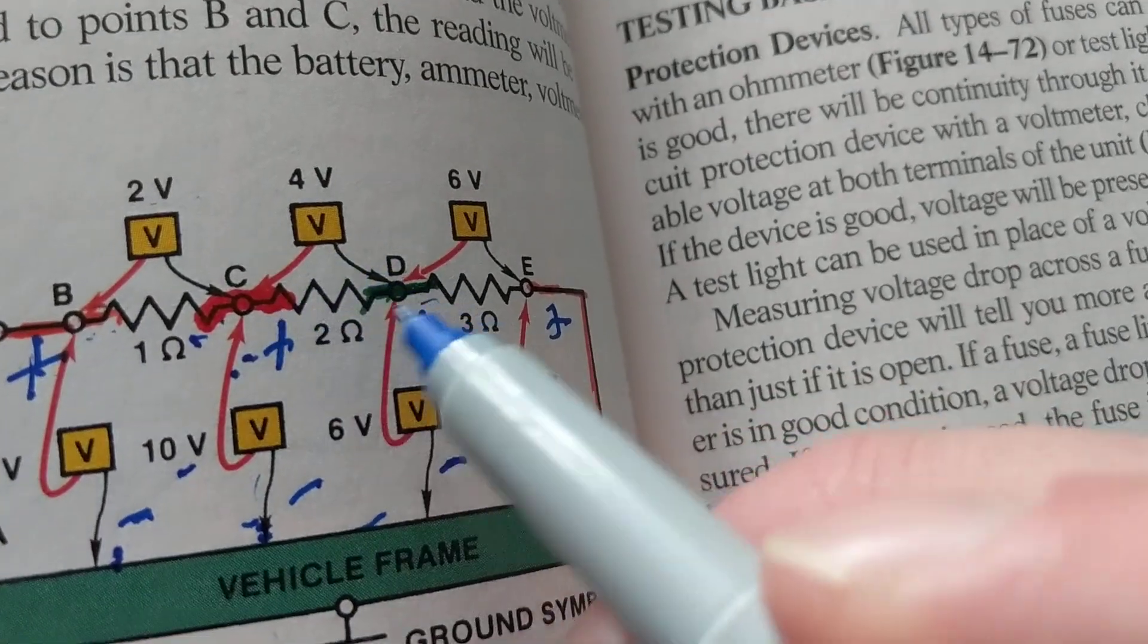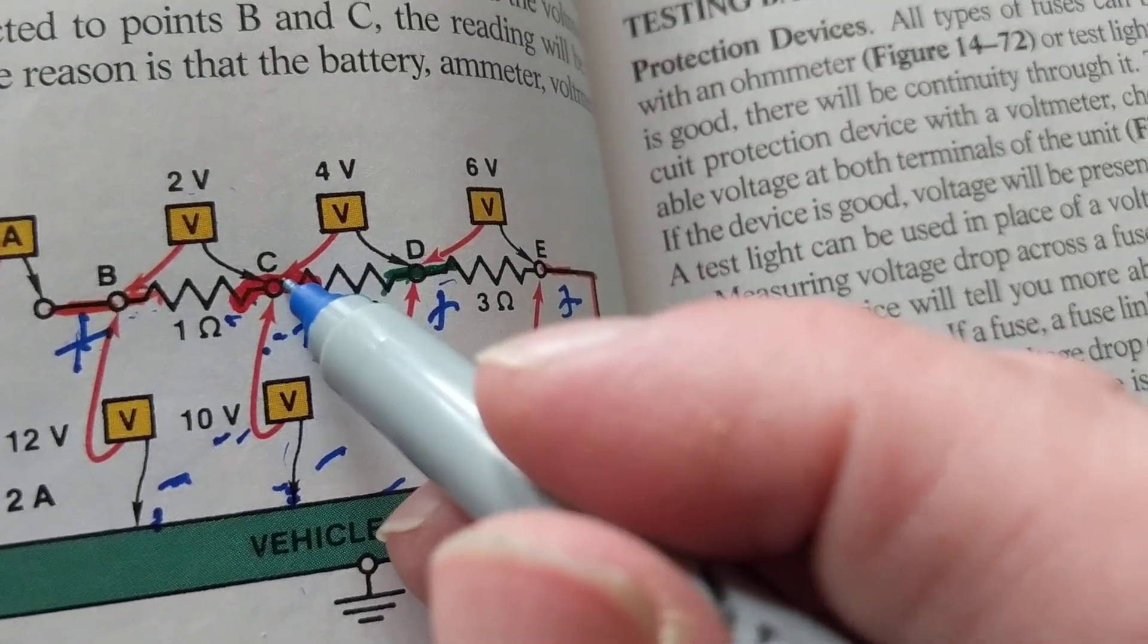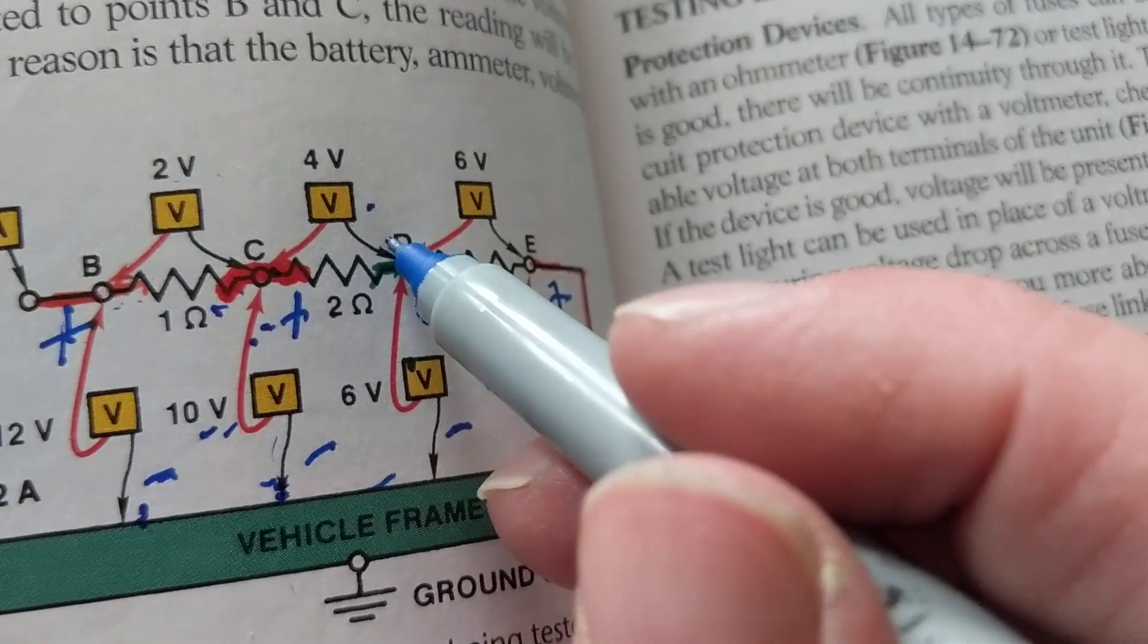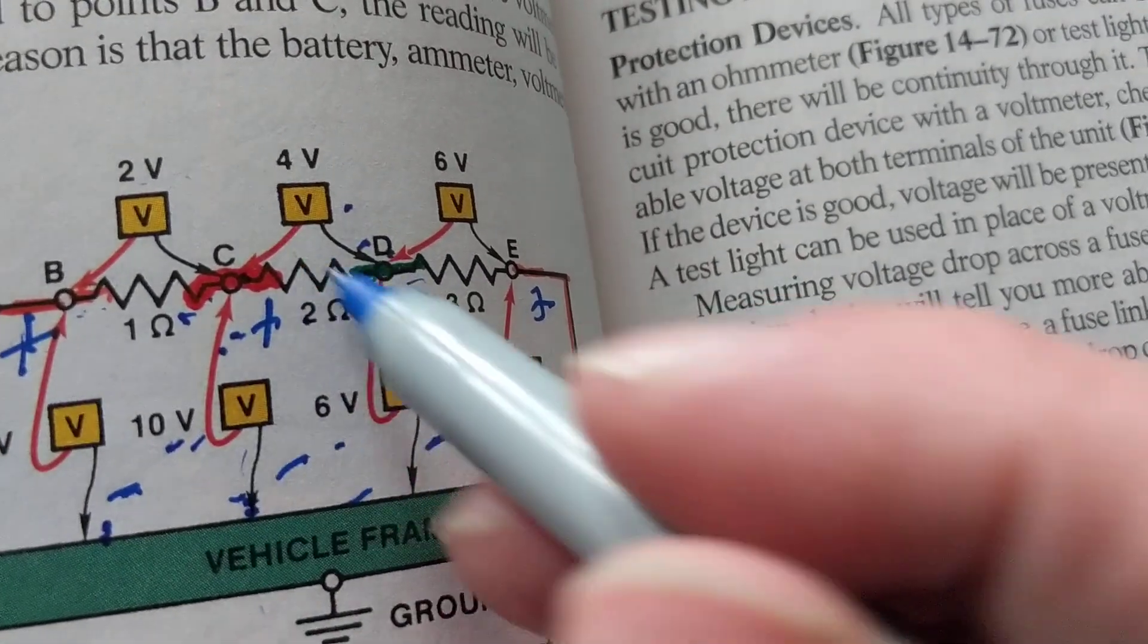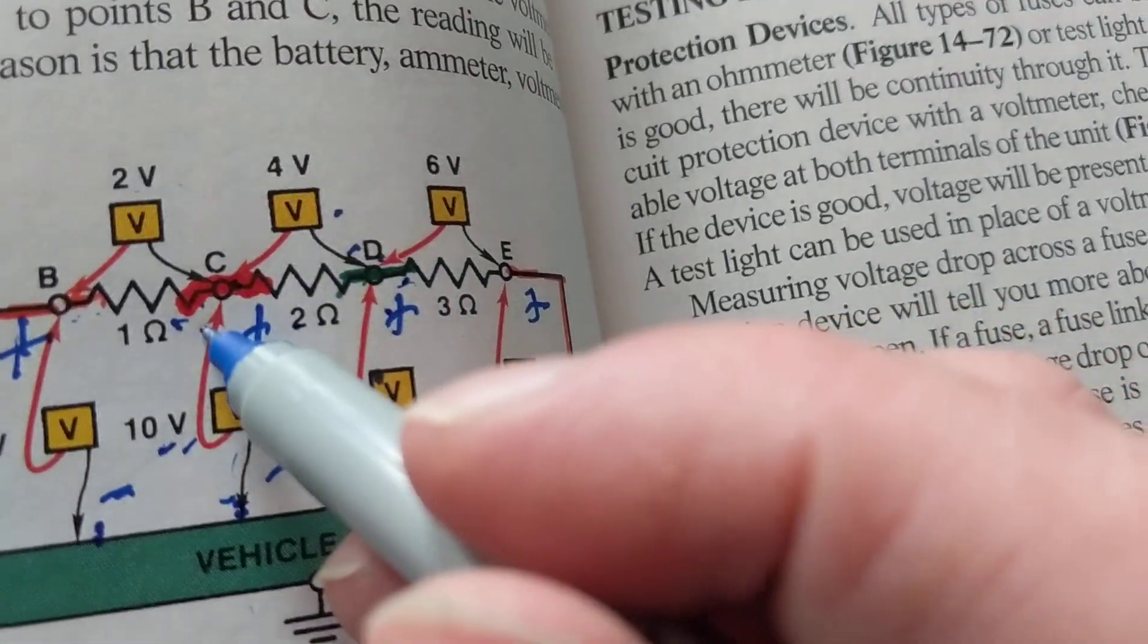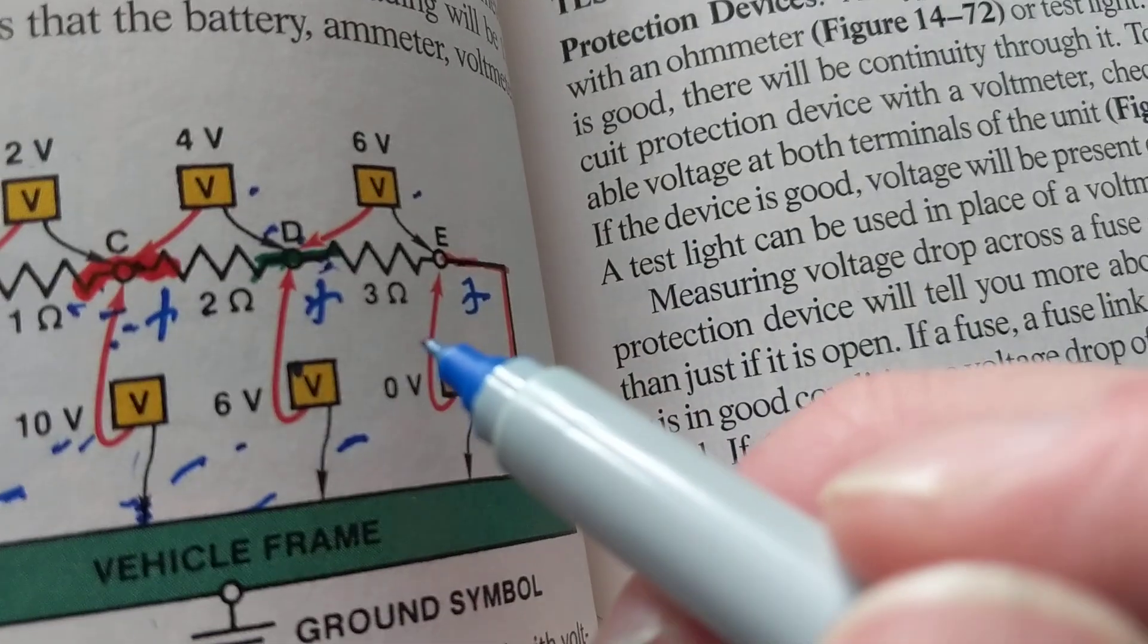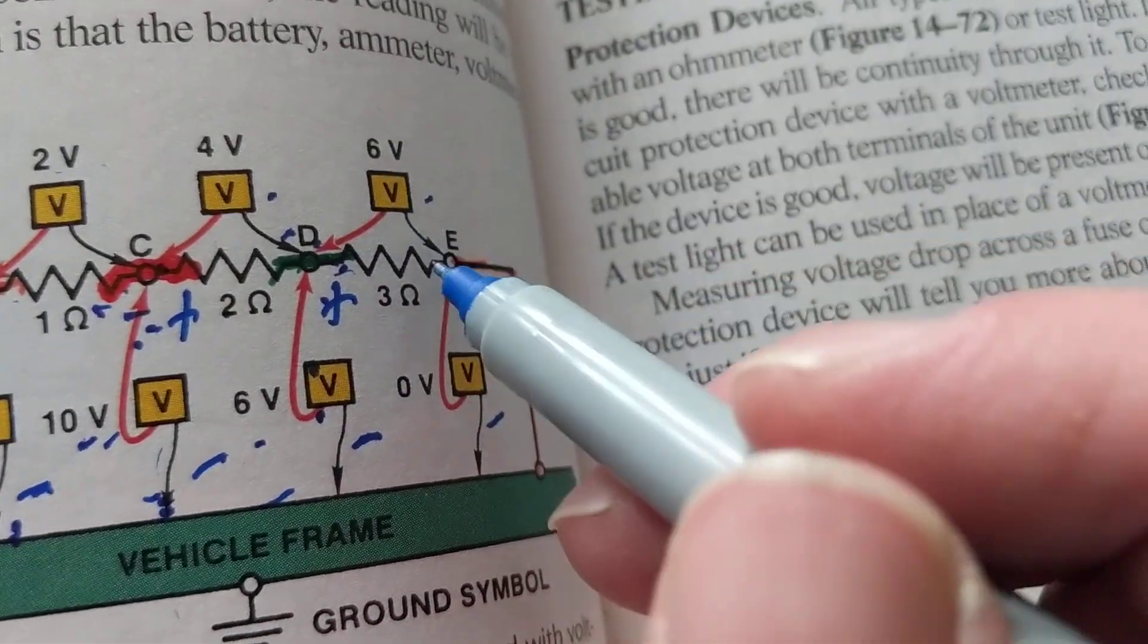So we lost 12 volts to 10 volts is 2 volts, same as going across it. What about this? We said we lost 4 volts across this one. Let's prove it. 10 volts was here. How much should D be? 4 volts less, because we just lost 4 volts. So that means it should be 10 volts to 6 volts. This point is 4 volts less than this one.